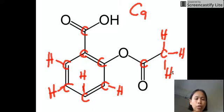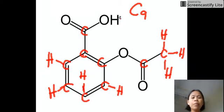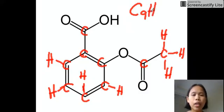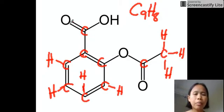Now it's time to count all the hydrogens to get the molecular formula. We have three from the tip, plus four from the ring — seven — plus the OH here, that's H8. Then we count all the oxygens: one, two, three, four oxygens. So the molecular formula is C9H8O4.